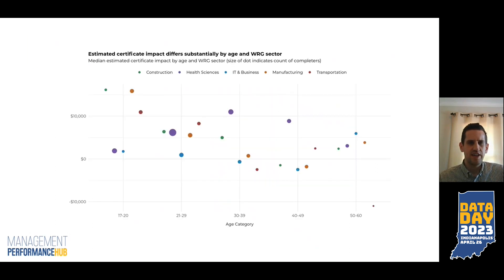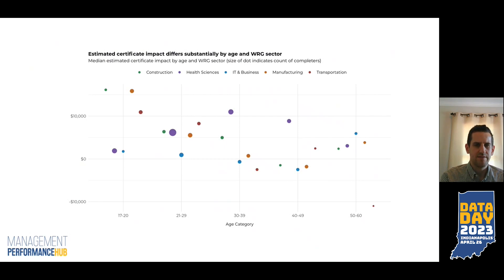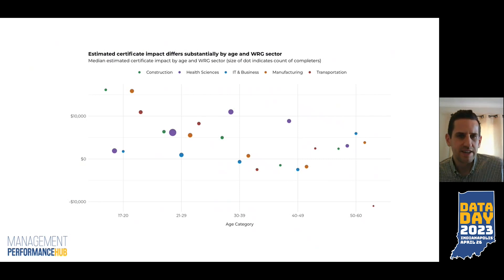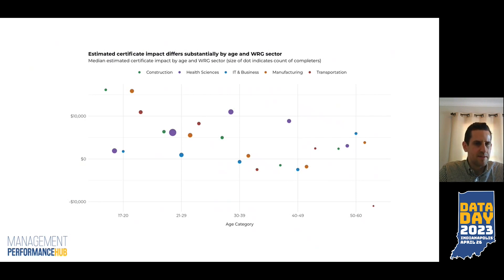Another key factor is the individual's age at the time of completion. Each bubble gives the estimated certificate impact — we've already done that subtraction to get these values. The five industry sectors are shown in different colors, and along the x-axis, individuals are broken down into various age categories. The size of the dot indicates the count of certificate completers for that particular industry-age bracket combination. Overall, younger completers see higher wage gains than older certificate completers. This is likely partly due to the fact that younger completers' pre-wages may represent them working part time near the end of high school, while their post-wages reflect full-time employment two years later.